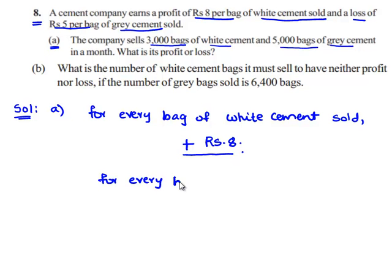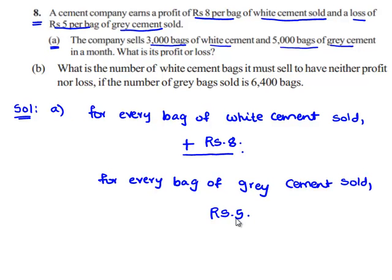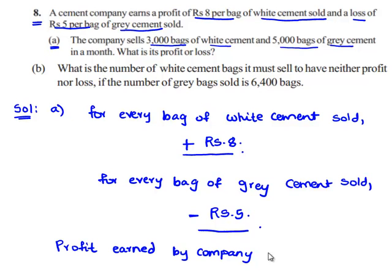For every bag of grey cement sold, the company earns a loss of Rs.5. Since it is a loss, we represent it with a negative symbol. In the first part, the company sells 3,000 bags of white cement. Therefore, the profit earned by selling 3,000 bags of white cement is equal to 3,000 times Rs.8.